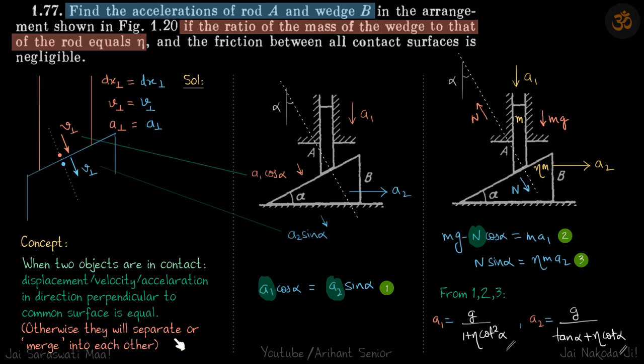Otherwise they will either separate or merge into each other. So suppose dx of first is not same as dx perpendicular of the other one. If this dx is more in this direction then this will merge into this. And if this dx is more in this direction then the surfaces will separate. But here in this problem the surfaces are never separating. So along the direction of the normal to the surface the velocities must be same.